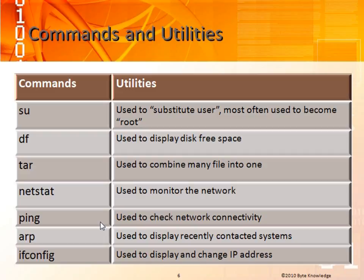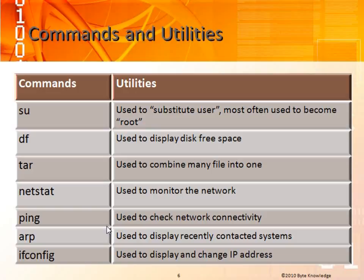DF is for disk free — I can display how much free space is left. We partition our disks for several different reasons, partly for backups. The largest thing we normally back up is what we call a file system, also referred to as a disk partition. TAR combines many files into one, so you're going to hear the term TAR file. You'll download TAR files off the internet. The systems administrator has other utilities to back up the system, but everyone uses TAR. NETSTAT is used to monitor the network, not unique to Unix — you'll see that in Microsoft as well.